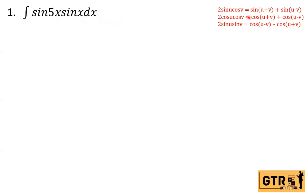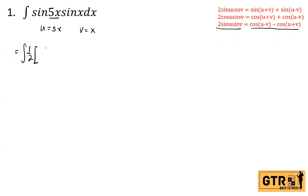We will use the identity for the product of two sines. Our u here is 5x and v is equal to x. Since we don't have a 2 in the integral, we will multiply by one half. So this becomes the integral of one half times the quantity cosine(u−v), which is cosine(5x−x), minus cosine(u+v), which is cosine(5x+x), dx.